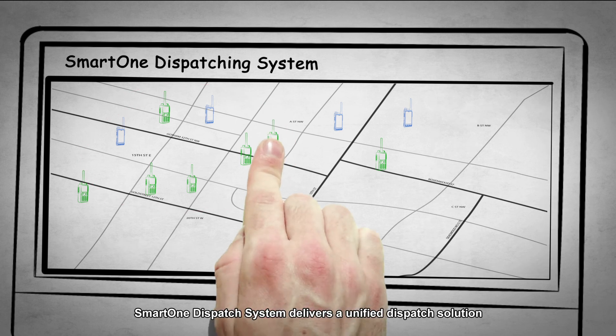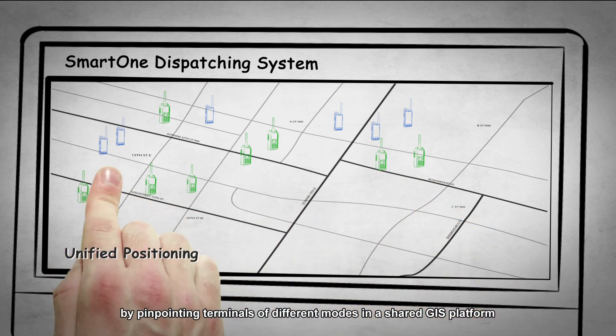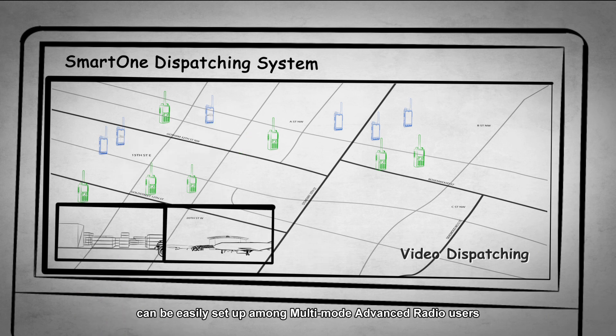SmartOne dispatch system delivers a unified dispatch solution by pinpointing terminals of different modes in a shared GIS platform. Point-to-point or group video calls can be easily set up among multi-mode advanced radio users.